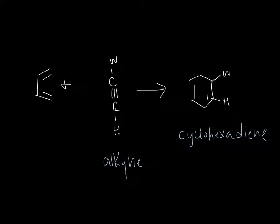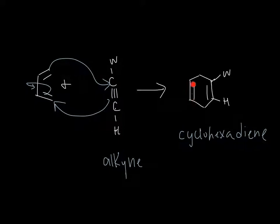Let's go to the mechanism — it's pretty simple. This pi bond attacks the carbon here. This pi bond, in return, comes in from the bottom and attacks, so this pi bond moves up here. Since we moved this bond up here, this bond is now the new bond in our product. Notice that our alkyne has three bonds, so we're getting rid of one bond, but we still have that one extra bond — that's why our product looks a little different and we have this extra bond. As usual, we have our withdrawing group attached to our dienophile.